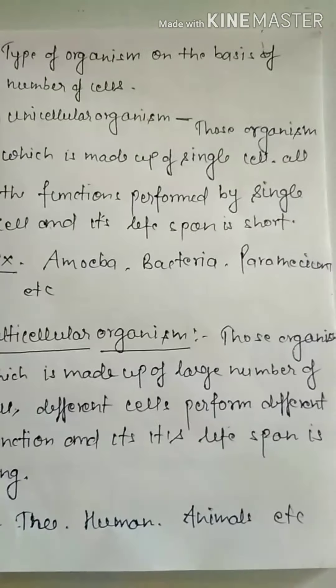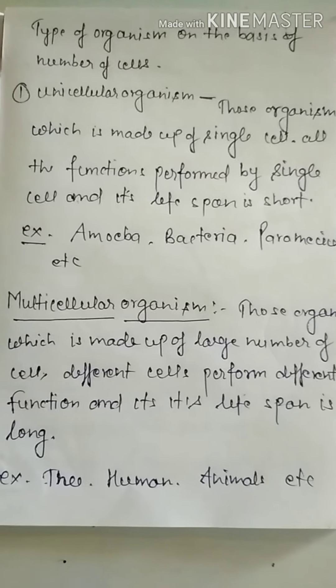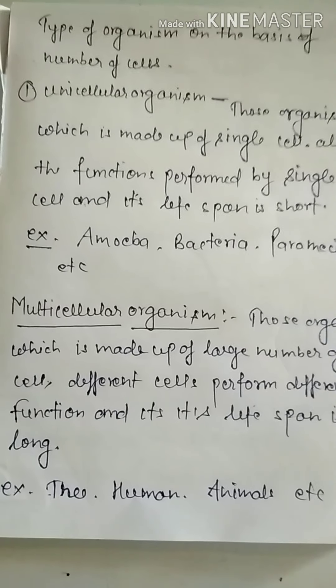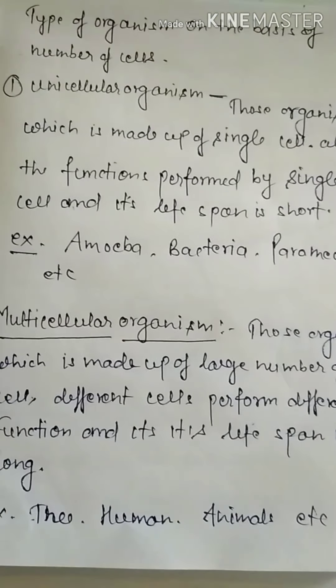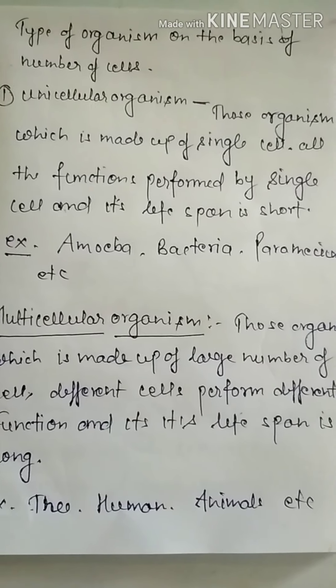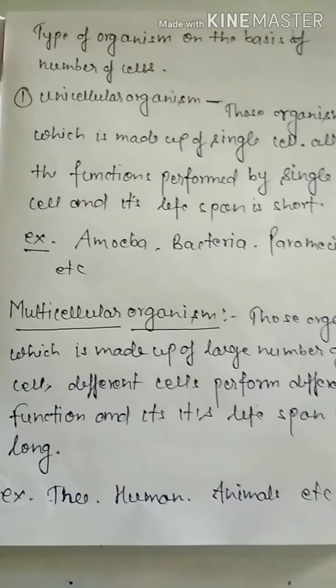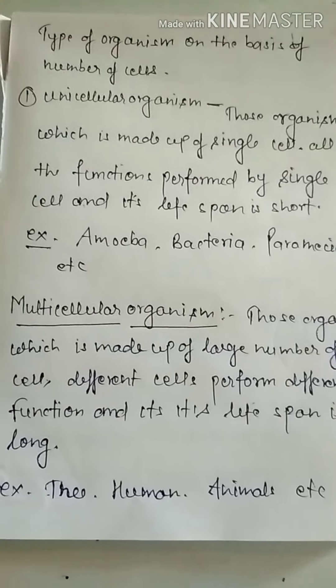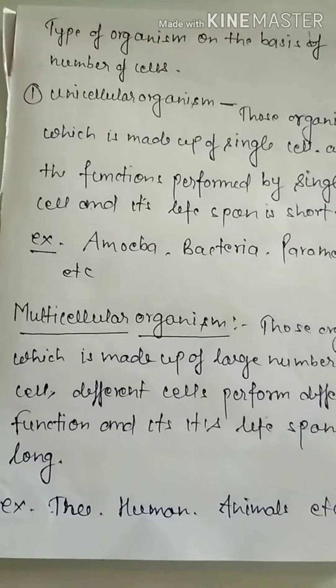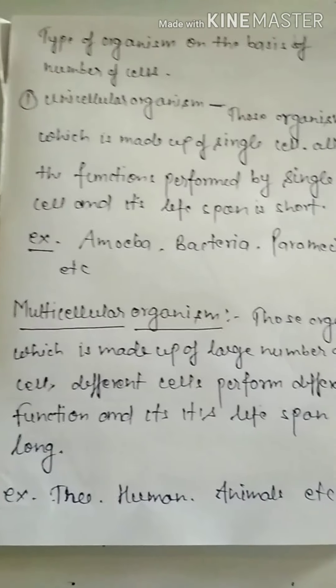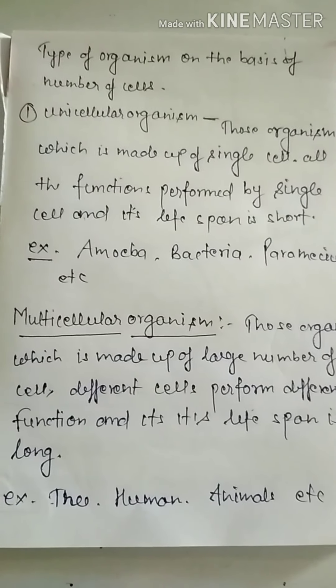We see the types of organisms on the basis of number of cells: unicellular organisms and multicellular organisms. Unicellular organisms are those organisms which are made up of single cells. All their functions are performed by single cells and their life span is short. Examples are amoeba, bacteria, and paramecium.